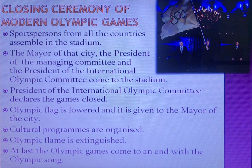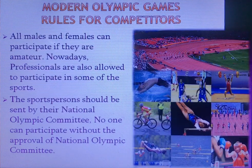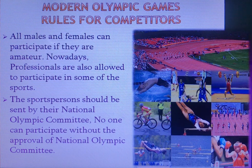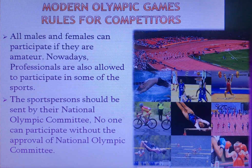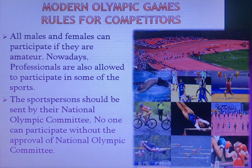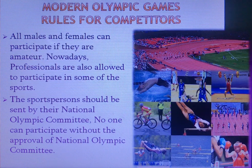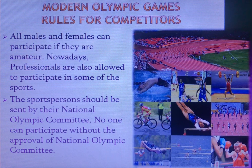Now we learn about the rules for competitors in Modern Olympic Games. The first rule is that participants should be amateur athletes — both male and female — though nowadays professionals are also allowed to participate. The second important rule is that all sports persons must be selected and sent by their National Olympic Committee; without their approval or recommendation, no one can participate in the Olympic Games.